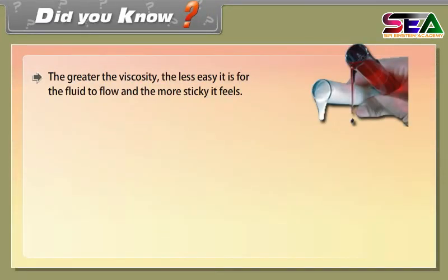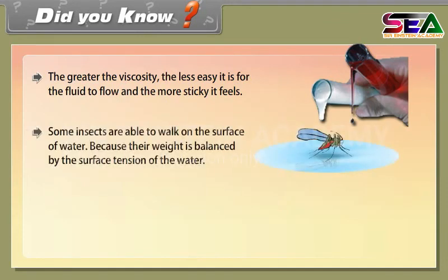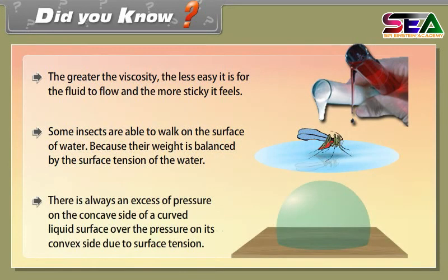Did you know? The greater the viscosity, the less easy it is for the fluid to flow, and the more sticky it feels. Some insects are able to walk on the surface of water because their weight is balanced by the surface tension of the water. There is always an excess of pressure on the concave side of a curved liquid surface over the pressure on its convex side, due to surface tension.